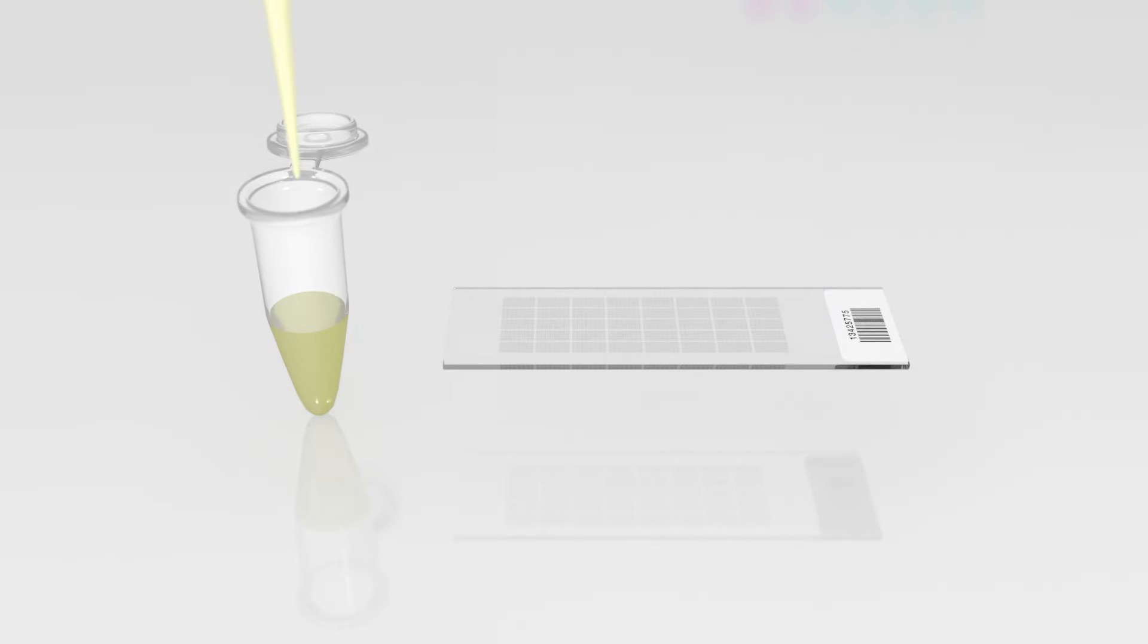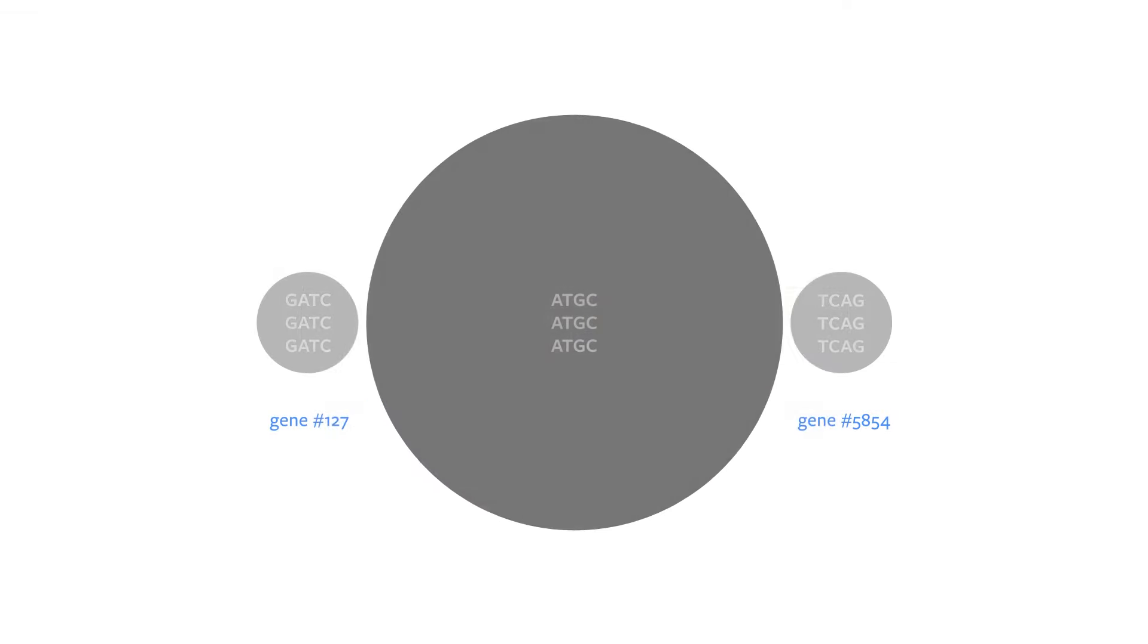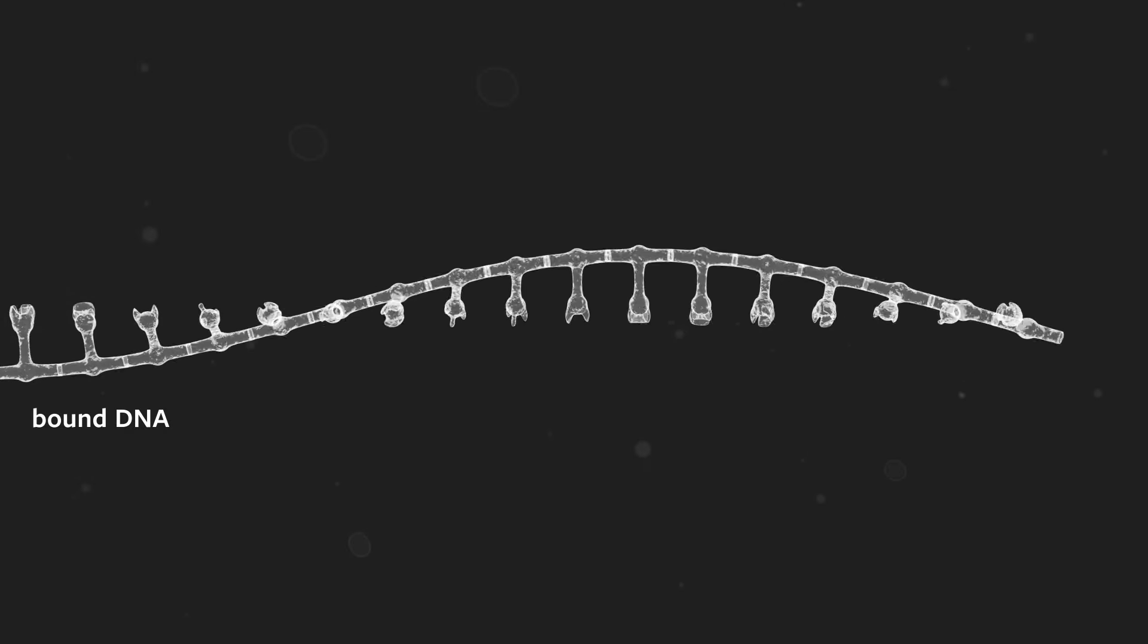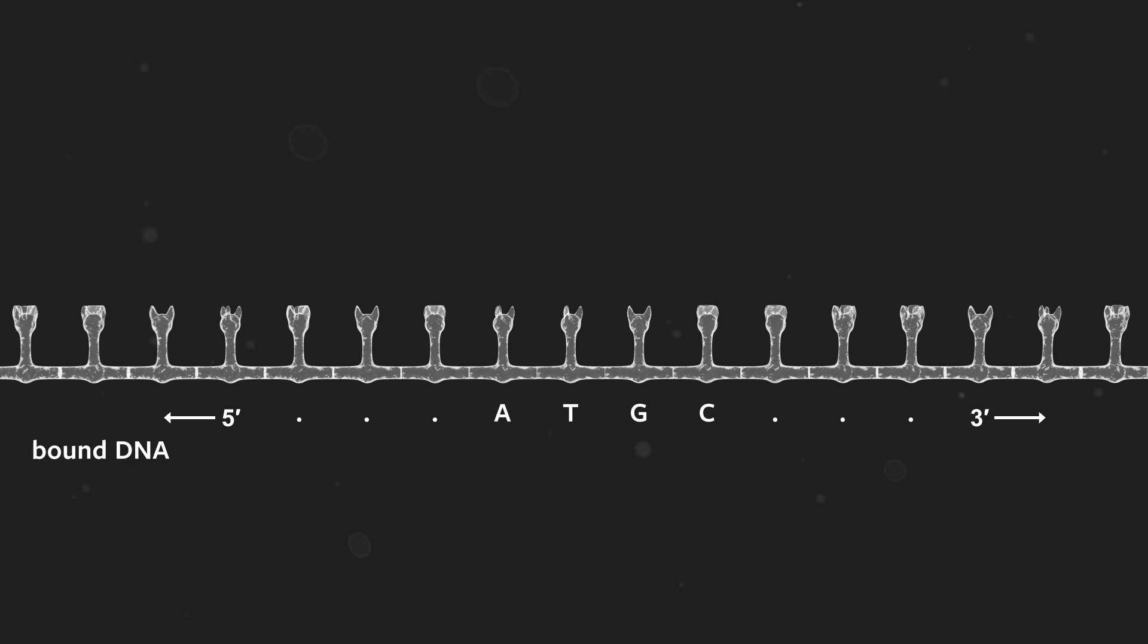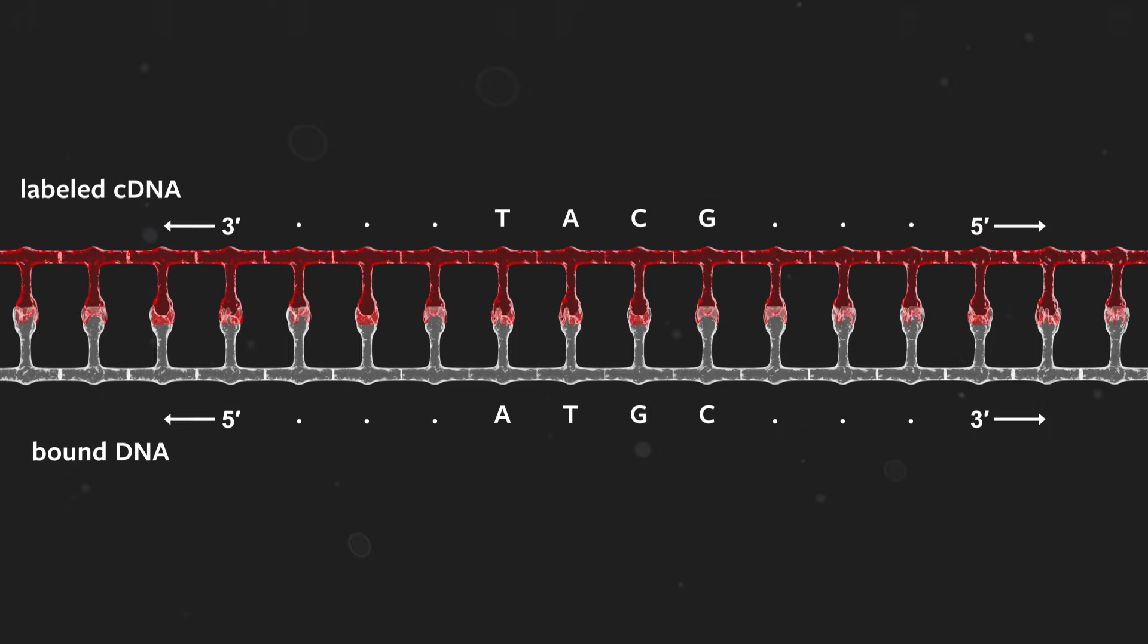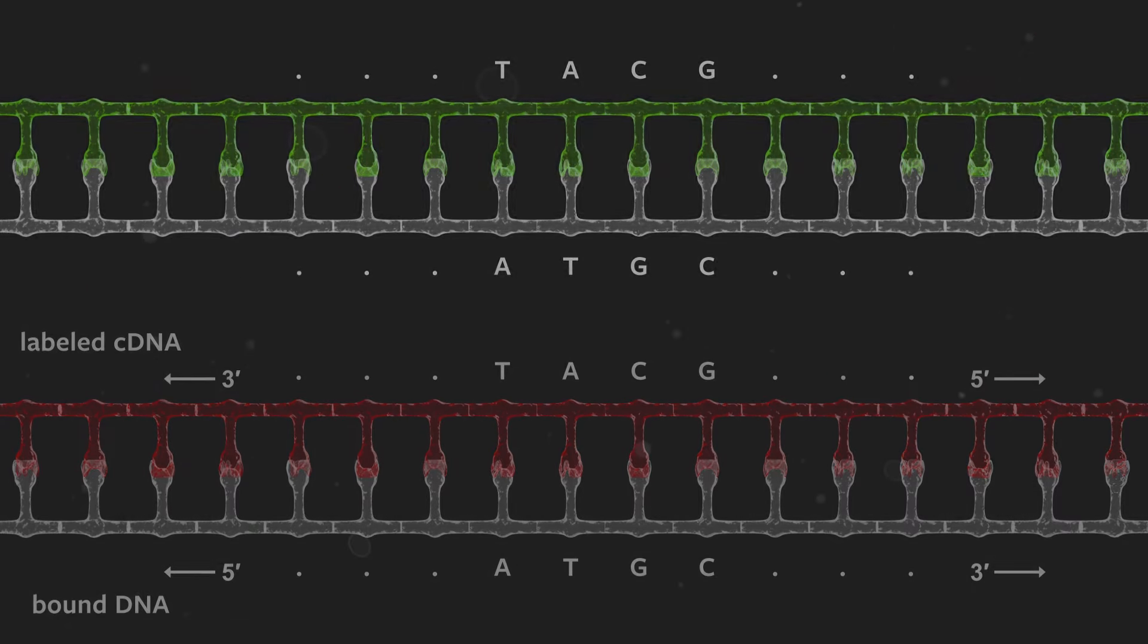Let's incubate the mixed cDNA with the DNA chip. For the sake of our example, we'll zoom in and show that some of the labeled cDNA have bound to the DNA in the spots and formed base pairings. Here we see green and red cDNA bound to this spot.